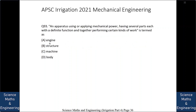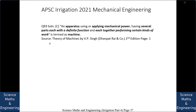An apparatus using or applying mechanical power, having several parts each with a definite function, and together performing certain kinds of work, is termed as: A. engine, B. structure, C. machine, or D. body. The answer is C: machine.